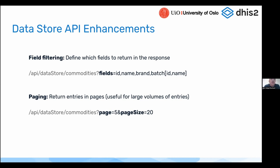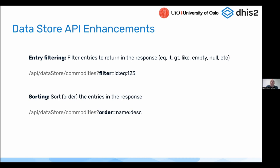We also added paging. Now you can return entries in the data store in pages. You can set the page number and the page size in the URL using the page and page size query parameters. This is very useful if you have a large volume of data — if you have hundreds of thousands of entries in a namespace, it's not practical to retrieve all of it. Instead, you would like to do it in pages. This works exactly the same way as it does in the normal metadata API.